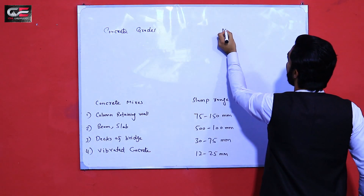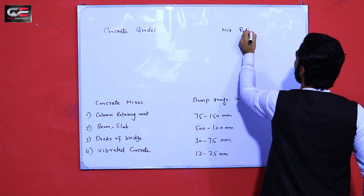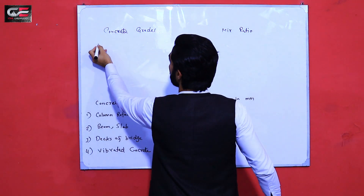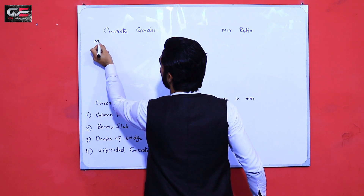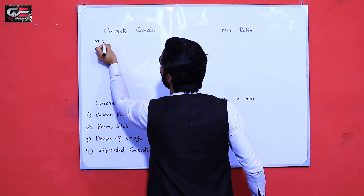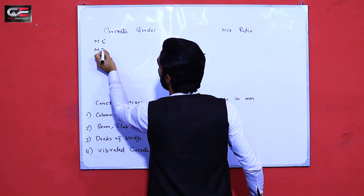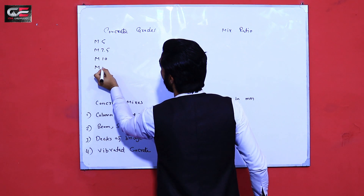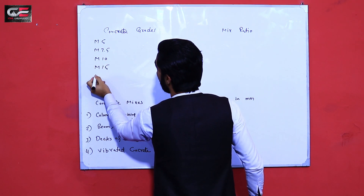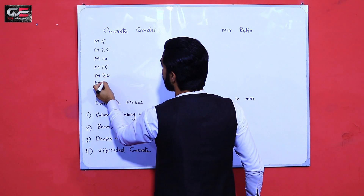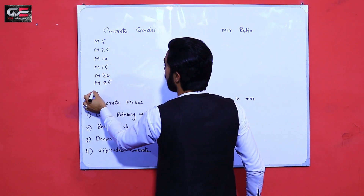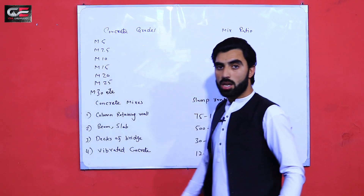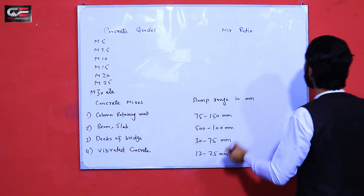On the other side we have mix ratio. First we have a question: we have different grades of concrete, for example M5, M7.5, M10, M15, M20, M25, M30, and so on.